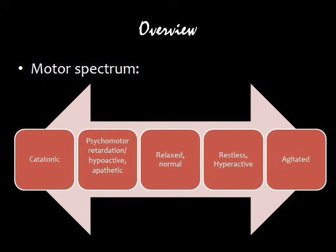Here is the motor spectrum. In the middle is relaxed, normal, typical movement, and at the ends of the spectrum are the more extremes. At one end is the deactivating range on the left side, and on the other end is the activating range on the right side. On the left, the deactivating range, relaxed or normal becomes psychomotor retardation, also known as hypoactive movement, and apathetic fits in here, and one step beyond that is catatonic or catatonia. As we progress, the degree of deactivation becomes more severe.